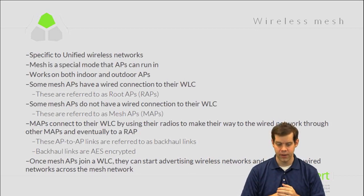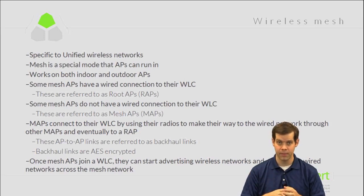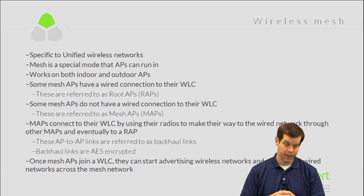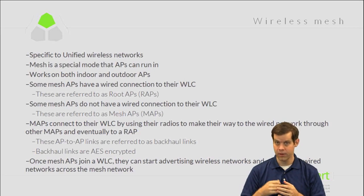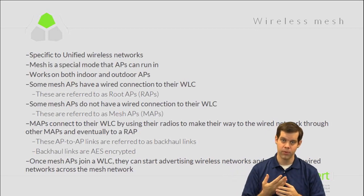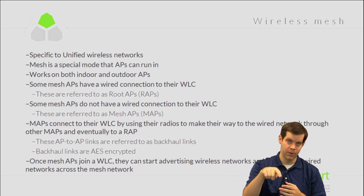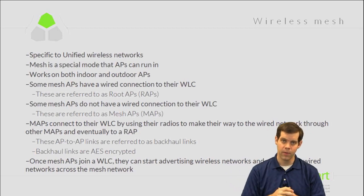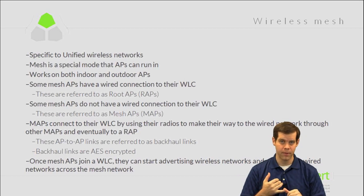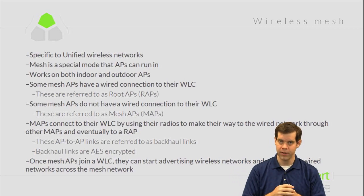Once a mesh AP joins a controller, it can do one or both of two different things. It can advertise WLANs, providing wireless connectivity for wireless clients. It can also do wired bridging — something can plug into the wired port of a MAP and have that wired traffic travel hop to hop across the backhaul, making its way to a RAP and dropping off on the wired network there. So mesh APs can support wireless clients as well as wired bridging — a mixture of a regular AP and a bridging functionality.